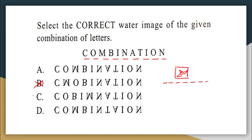Option C is wrong because it shows C O B — it should be M there for 'combination'. So option C is also incorrect. Option D is wrong because after N it should be A, but T is appearing there. So the correct answer has to be option A. When you invert all these letters, this is how they appear in the water image. The correct answer is option A.